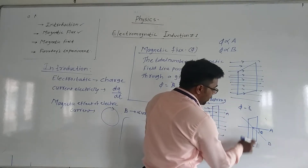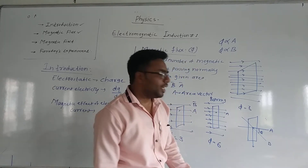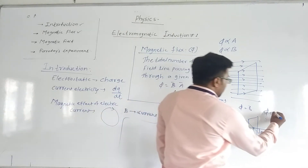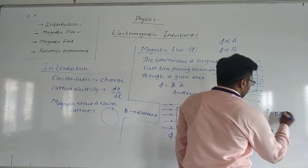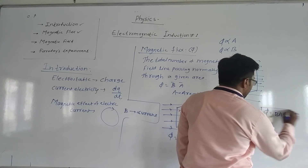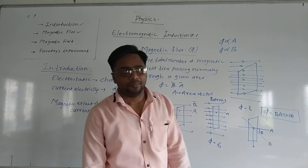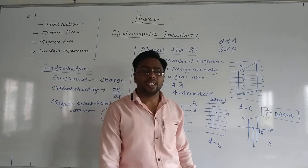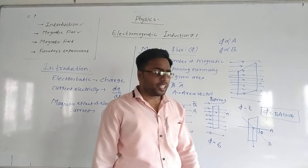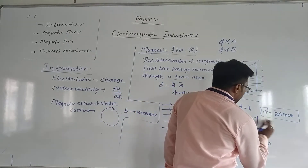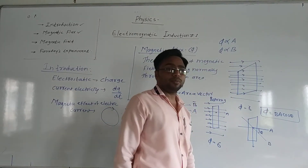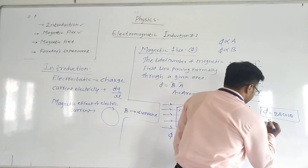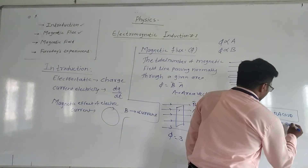This is B cos θ. In this situation, this can be represented by phi equals B into A cos θ. So phi equals B into A cos θ. This is the B dot A scalar product — the number of scalar products is the same thing. Where we are talking about flux, it is a scalar quantity. Flux is a scalar quantity.